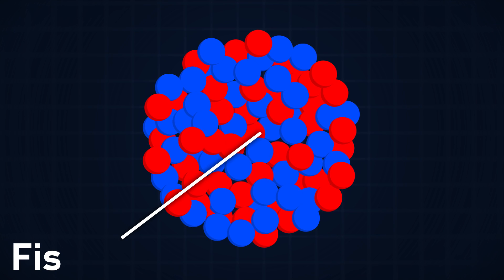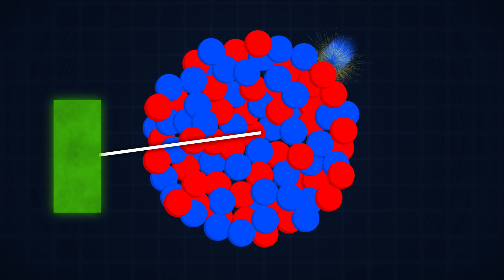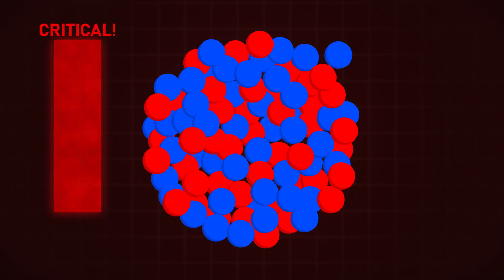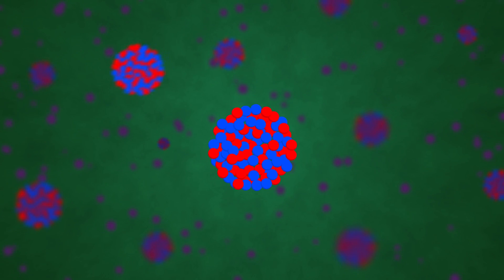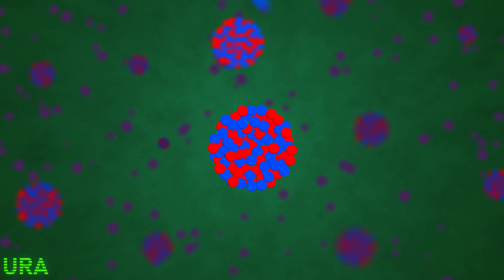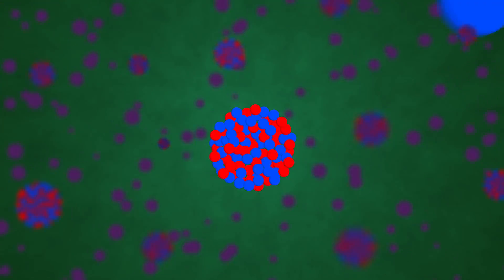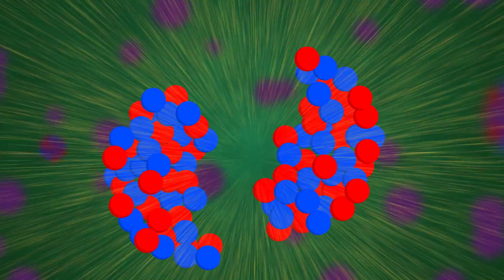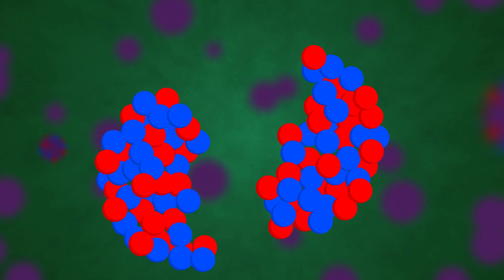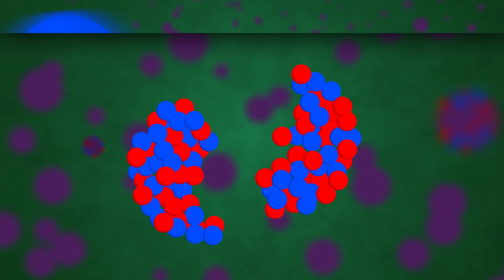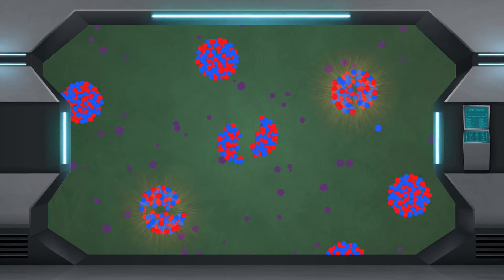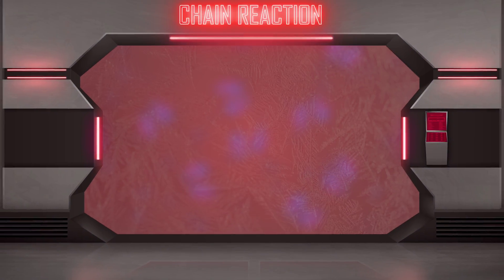Some nuclei are said to be fissile, meaning that the energy the nucleus gains from receiving a neutron puts it above its critical energy required for fission. Now let's say we have a bunch of uranium-235 nuclei. At some point a neutron might collide with one of these nuclei and the nucleus is split into two. A huge amount of energy is released along with two or three neutrons, which can then collide with other uranium-235 nuclei, releasing two or more neutrons each — giving you a chain reaction.